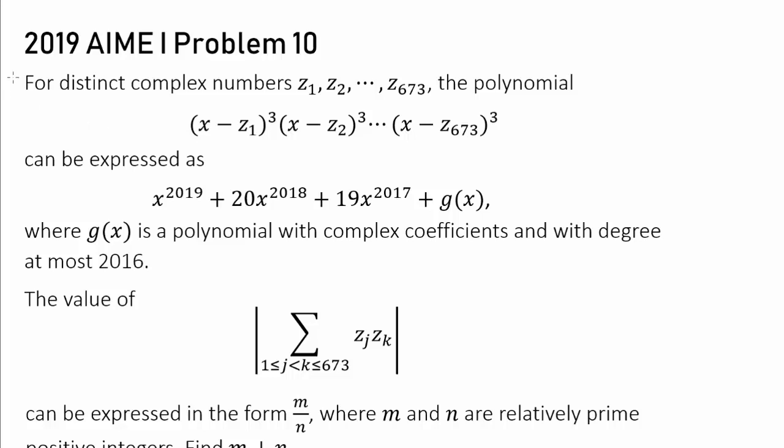Here is one of my favorite problems from this year's AIME1, which is problem number 10. For distinct complex numbers z1, z2, all the way to z sub 673, you may realize right away that 673 times 3 is going to get us 2019.